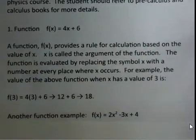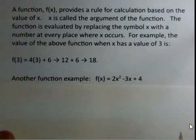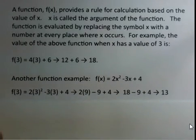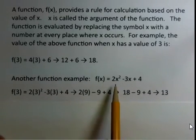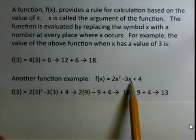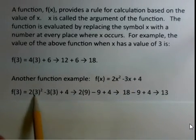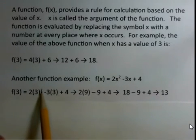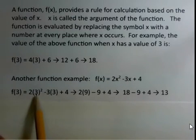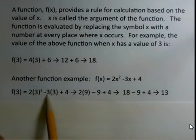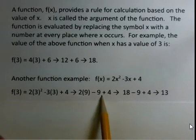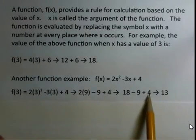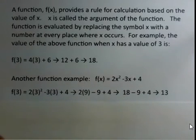Here's a different function — a quadratic function with x squared: 2x squared minus 3x plus 4. If we want to know the value of this function when x equals 3, we replace x with 3 at both locations. We get 2 times 3 squared minus 3 times 3 plus 4. Doing powers first: 3 squared is 9, giving 2 times 9, which is 18. Minus 3 times 3 gives minus 9, plus 4. That nets to minus 5, so 18 minus 5 gives us 13.